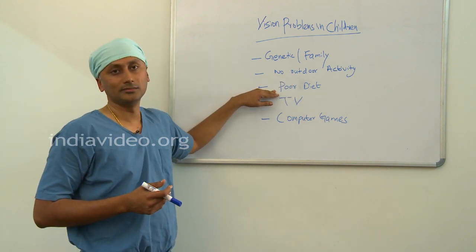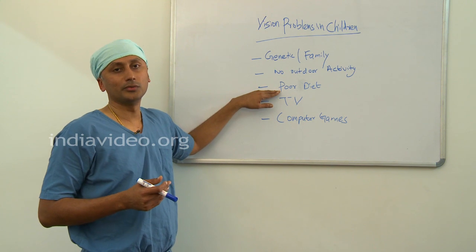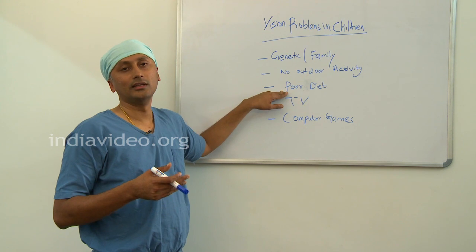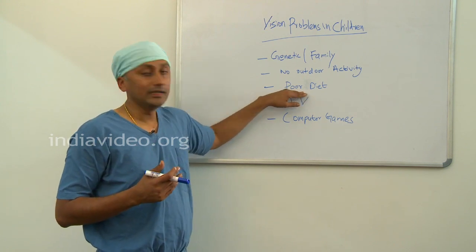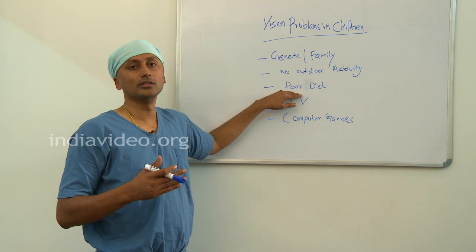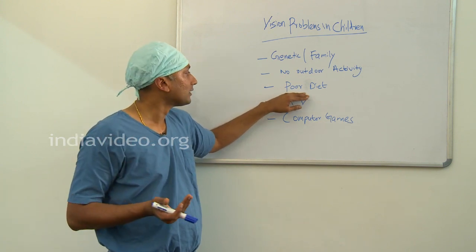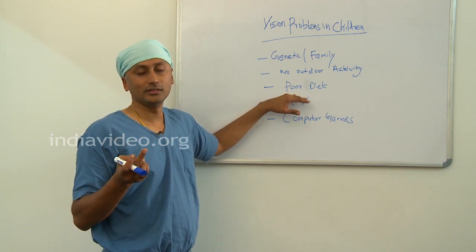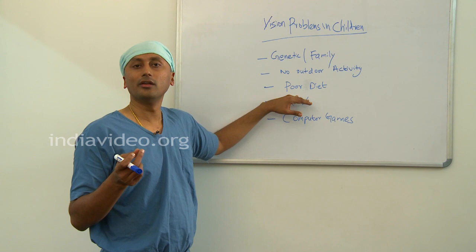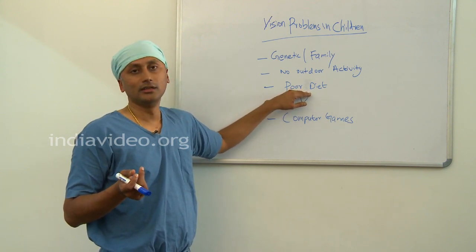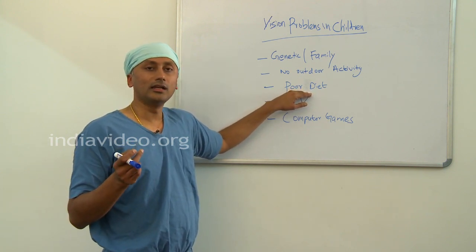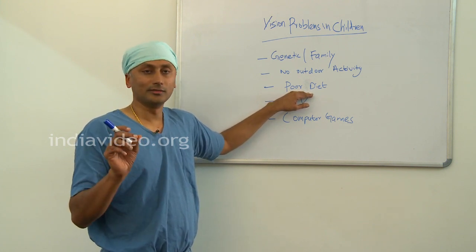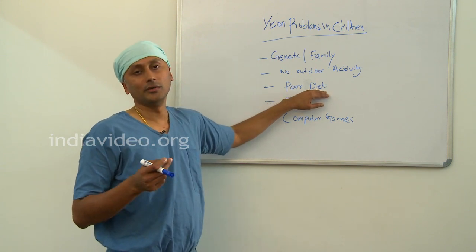The second important point is diet. Nowadays our children are more exposed to chicken or meat-related diet. In chicken, there is a high incidence of steroid injection, and eating such chicken can cause myopia or short sight to increase. The ideal diet for a child mainly consists of high oily fishes, green leafy vegetables, and carrot. For high oily fish, we recommend river fish — not fried but as curry. For green leafy vegetables, we recommend spinach.